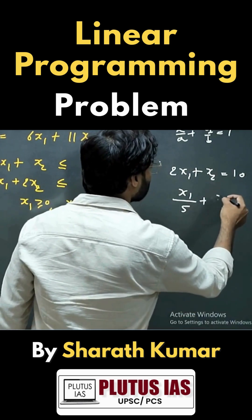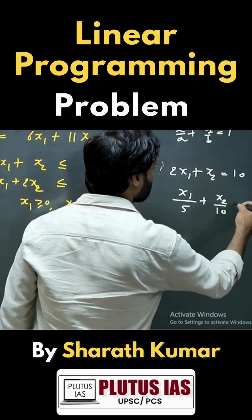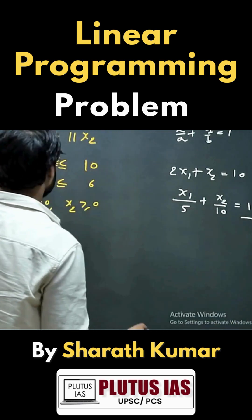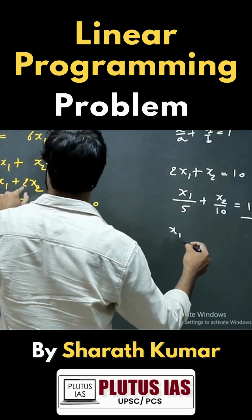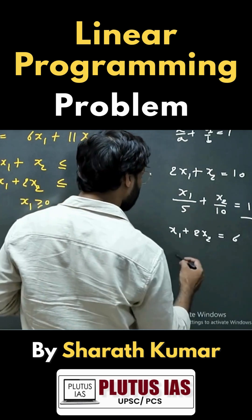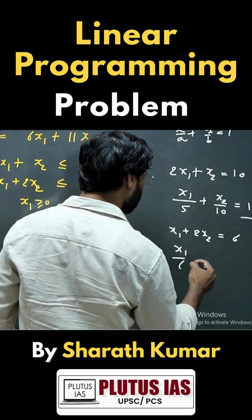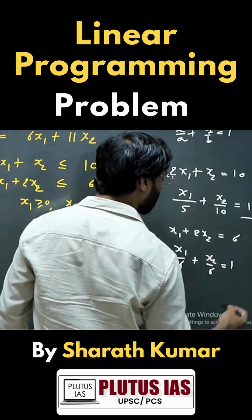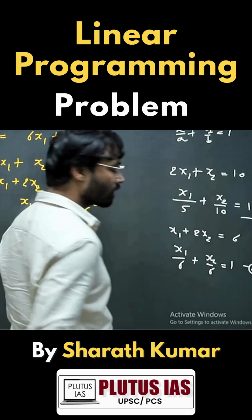And plus x2 by 10 equal to 1, that is the first line. And second is given as x1 plus 2x2 equal to 6, that means x1 upon 6 plus x2 upon 3 equal to 1. So that is line number 2.